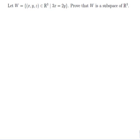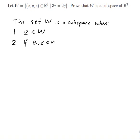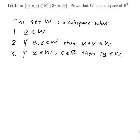If I'm supposed to prove it's a subspace, I need to know what the definition of subspace is. So the set w is a subspace when: 1, 0 is in w; 2, if u and v are in w, then u plus v is in w; 3, if u is in w and c is in r, then cu is in w. That's the definition of subspace, so I should just show all those three things.